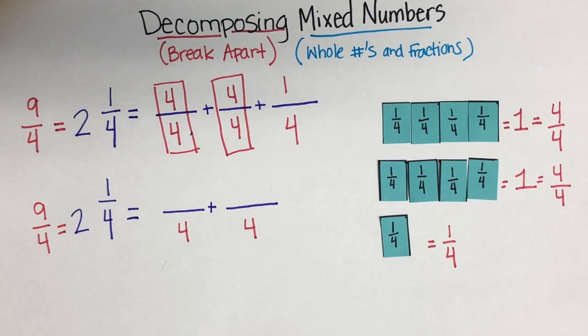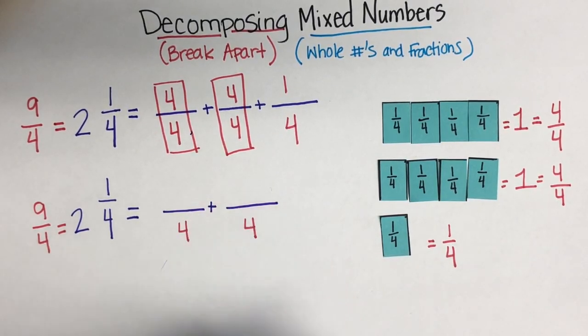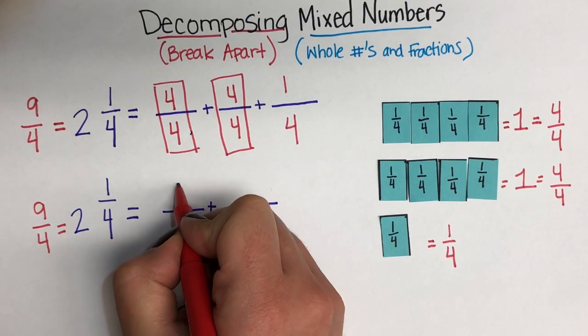And, I'm going to write 9/4 here so that you can see that 9/4 is the same thing as 2 and 1/4. So, now, all I'm thinking is, how can I make 9 with 2 numbers?